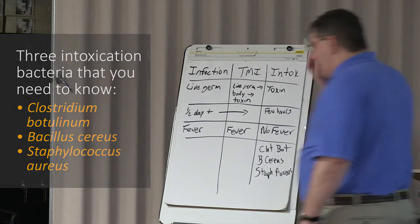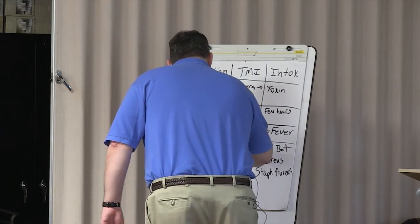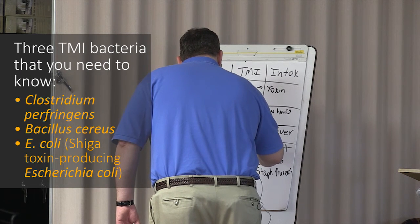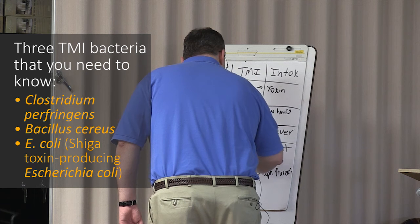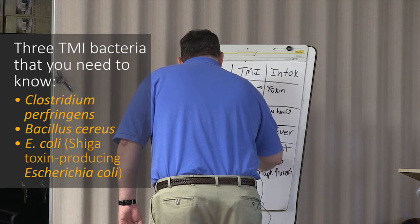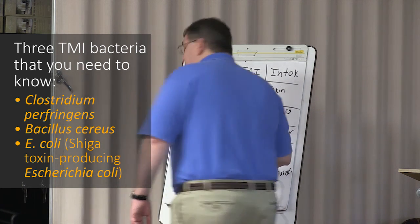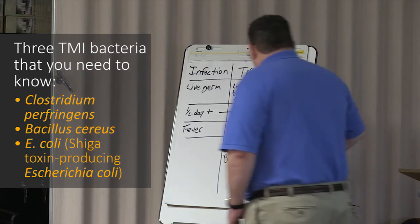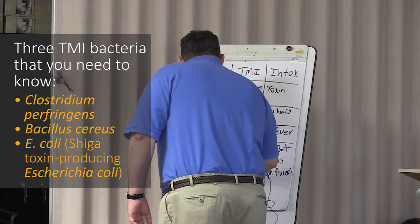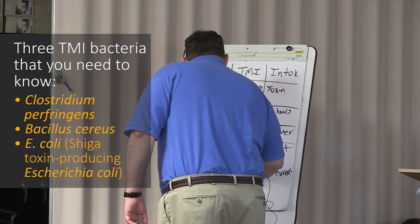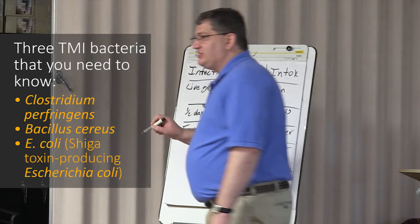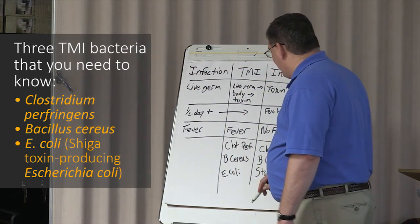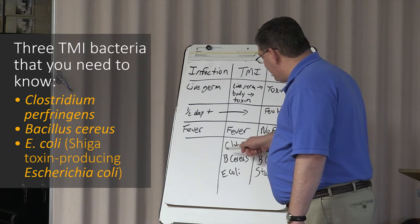The other group, TMI, has also three in there, and those are Clostridium perfringens, also Bacillus cereus. We will talk about the differences when we talk about Bacillus cereus. And then the other one is E. coli. Officially, that is Shiga toxin producing E. coli. But most people remember E. coli. So this one is CBE.